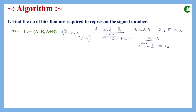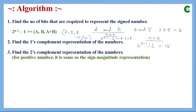After evaluating n, the next step is to find the two's complement representation of both numbers. We are applying two's complement arithmetic, so first we find the one's complement representation of both numbers, then the two's complement representation. For a positive number, the sign-magnitude, one's complement, and two's complement representations are all the same, so we don't have to worry much. But for a negative number, we must find the two's complement representation following the rules we have already learned.